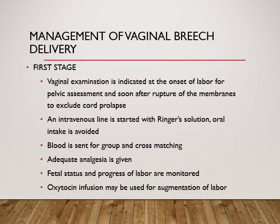Management of the first stage: vaginal examination is indicated at the onset of labor for pelvic assessment and also soon after rupture of the membranes to exclude cord prolapse. An IV line is started with Ringer's solution and oral intake is avoided because the patient may eventually need caesarean section. Blood is sent for grouping and cross-matching. Adequate analgesia is given. The progress of labor and fetal status are monitored frequently. If labor is not progressing well, augmentation with oxytocin infusion may be used.